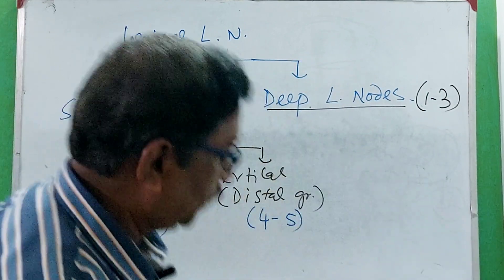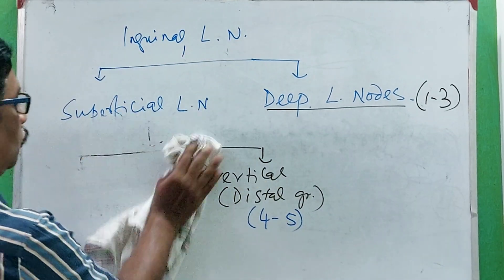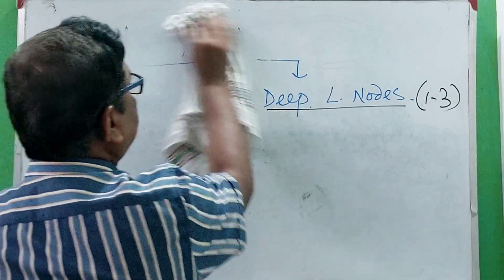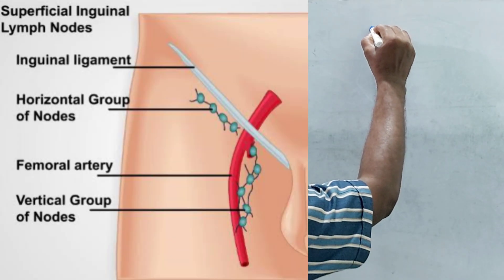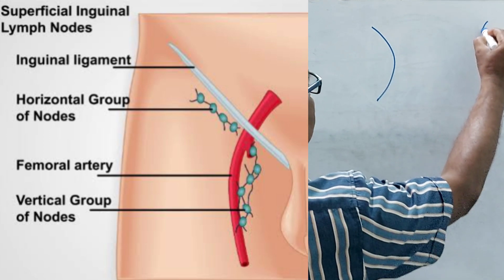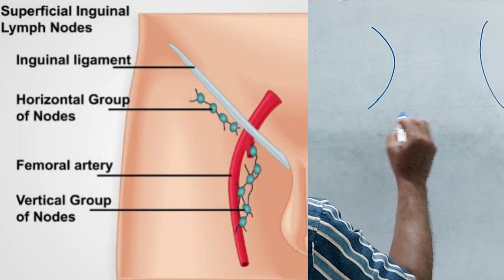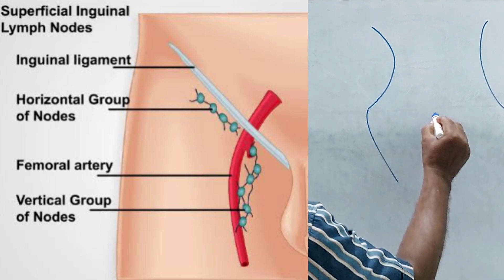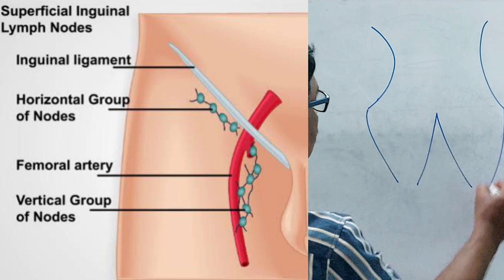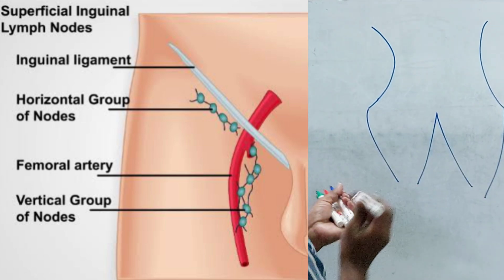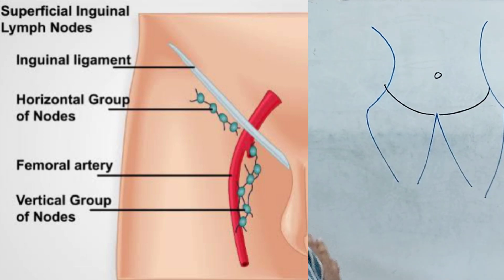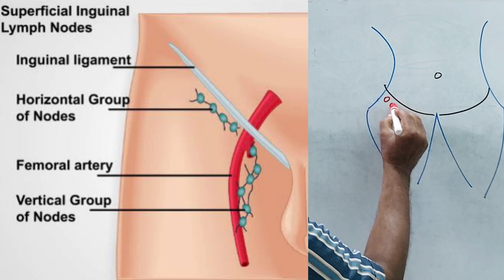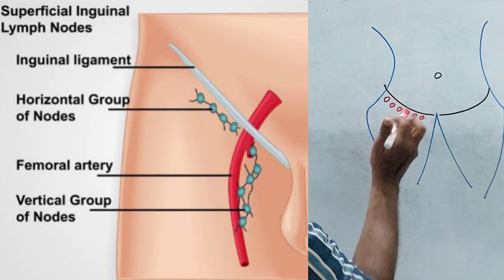Now I am drawing these lymph nodes. Here you will see the inguinal ligament on this side and the inguinal ligament on this side. Below the inguinal ligament you will get the horizontal group of lymph nodes.